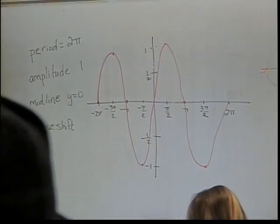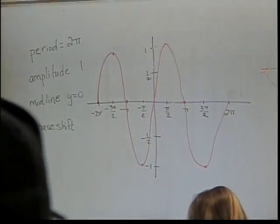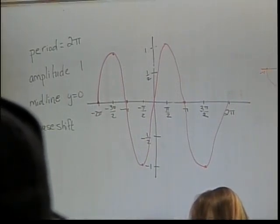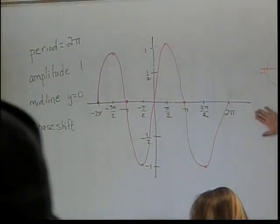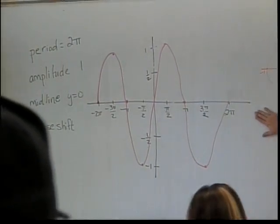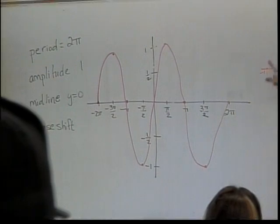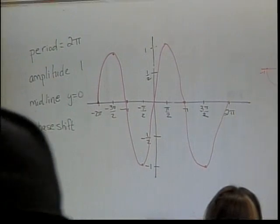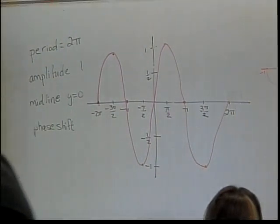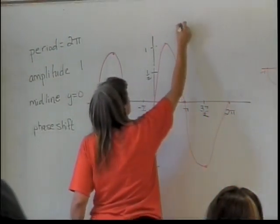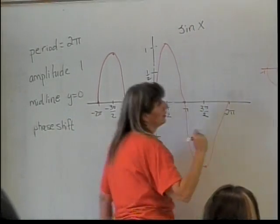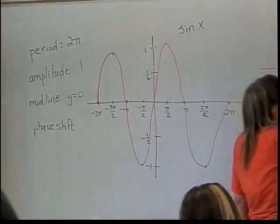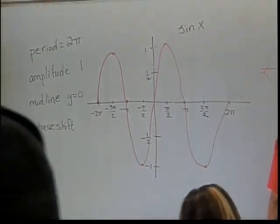So let's see what we have here. We want to find the cosine graph. We're going to basically do the same thing we just did, except this time we're going to be looking at, as we go through the circle, the y-coordinates. So this was our sine of x — I should probably label this. So now we're going to do the cosine of x.